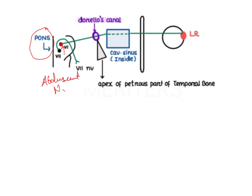It arises from the lower border of the pons and is generally found opposite to the pyramid of the medulla. It passes through a canal known as Dorello's canal. This is an important point — it passes through Dorello's canal, which is formed by the apex of the petrous temporal bone, and there is a ligament also involved known as the petroclinoid ligament.